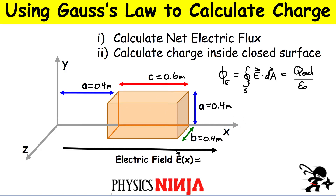We have to give a closed surface because that goes into the definition of Gauss's law. We have here a rectangular prism and I've given you the length of each side. This surface is going to be a square. The height is 0.4 meters and the width is 0.4 meters.